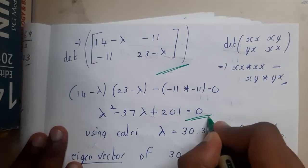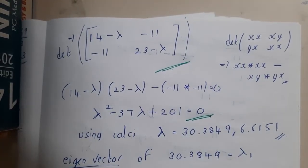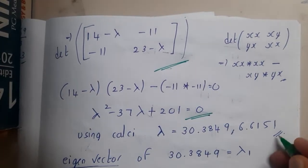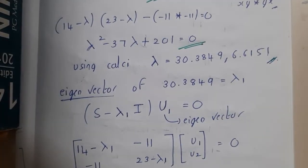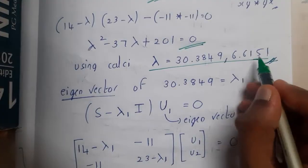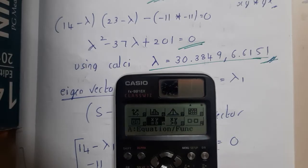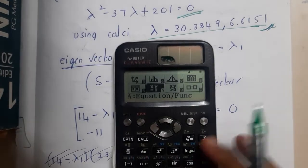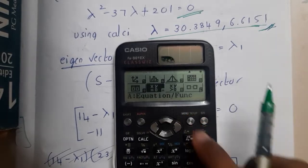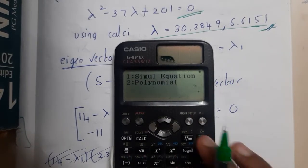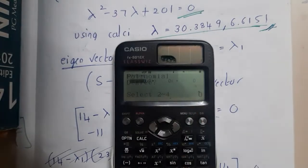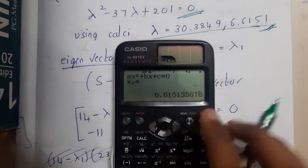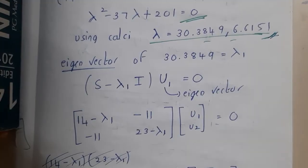If you solve it you get a quadratic polynomial. Using the calculator's equation or polynomial functions with degree 2, type the coefficients — 1, minus 37, and 201. You'll end up with values of approximately 30-point-something and 6-point-something, which are our two eigenvalues. Using the calculator you can do it within one minute maximum.